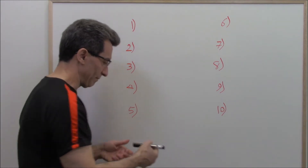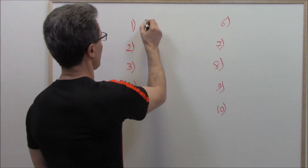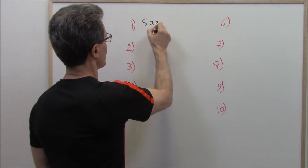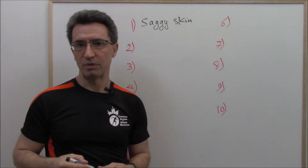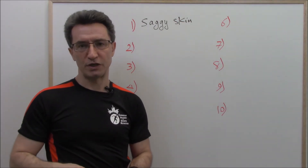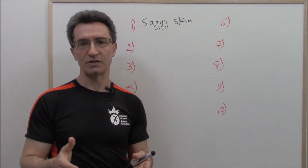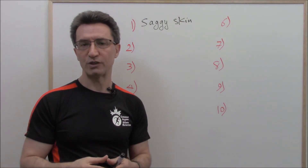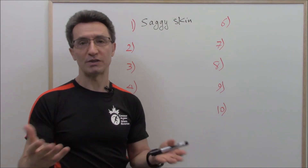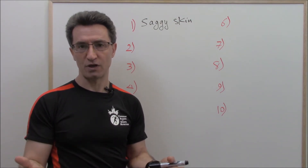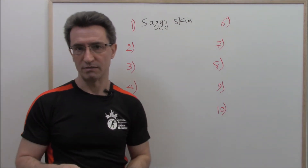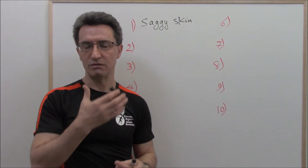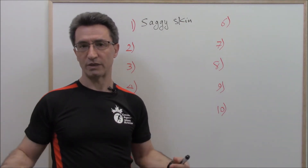Complication number one is saggy skin. This is probably the most common complication of rapid weight loss. It is because of the loss of skin elasticity. When you lose weight quickly, the muscles are not being moved and the skin doesn't have enough time to tighten itself. That's why you see saggy skin — which may appear under the chin, in the arms, in the legs, or around the belly.